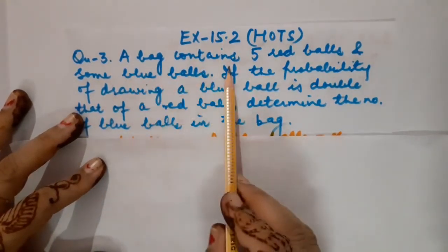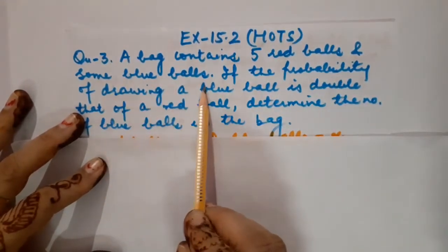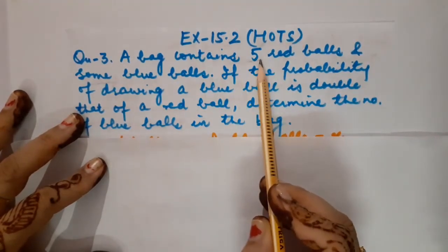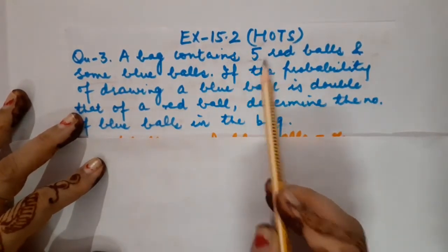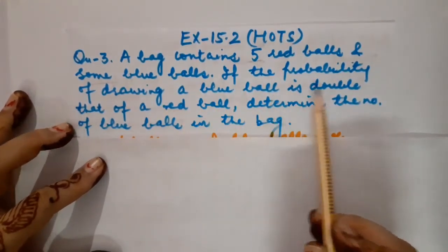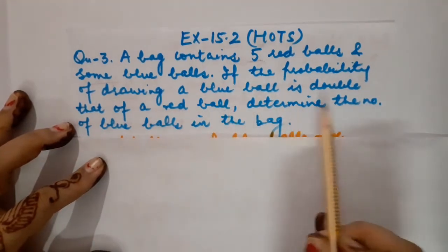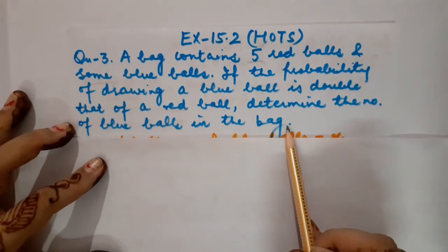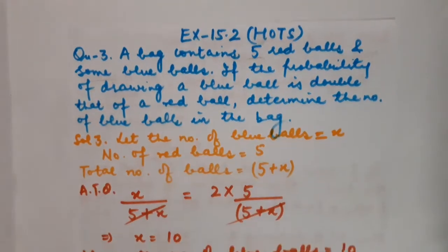So this is question number 3 — the very first horse question of today's lecture. A bag contains 5 red bowls and some blue bowls. We do not know the number of blue bowls, but the number of red bowls is equal to 5. If the probability of drawing a blue bowl is double that of a red bowl, then determine the number of blue bowls in the bag.